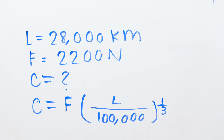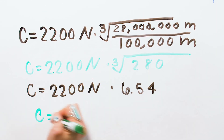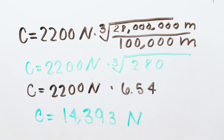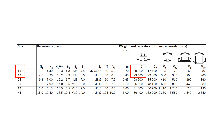Let's say the applied load is 2,200 newtons and the required life is 28,000 kilometers. Using the equation we just developed, we determined that the application requires a bearing with a dynamic load capacity of at least 14,393 newtons in order to achieve the desired life. Using the linear bearing data shown here for a recirculating ball bearing, we can see that the size 15 bearing doesn't have quite enough dynamic load capacity, C, at 9,860 newtons. So we move up to the size 20 bearing, which has a dynamic load capacity, C, of 23,400 newtons — more than sufficient for our required life.